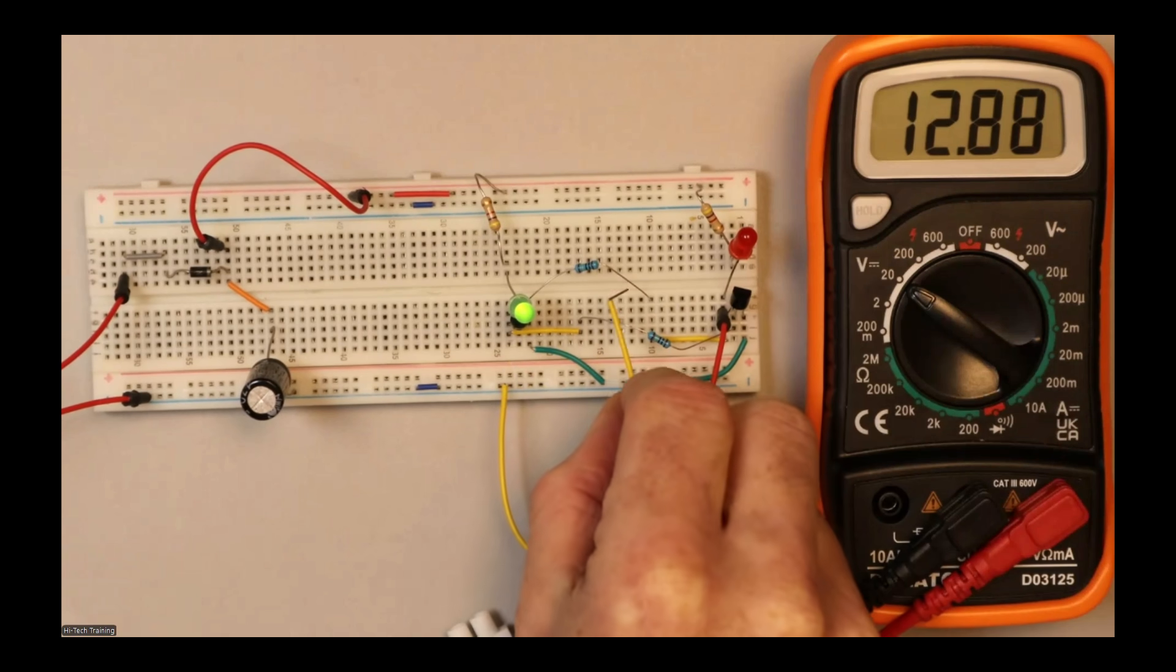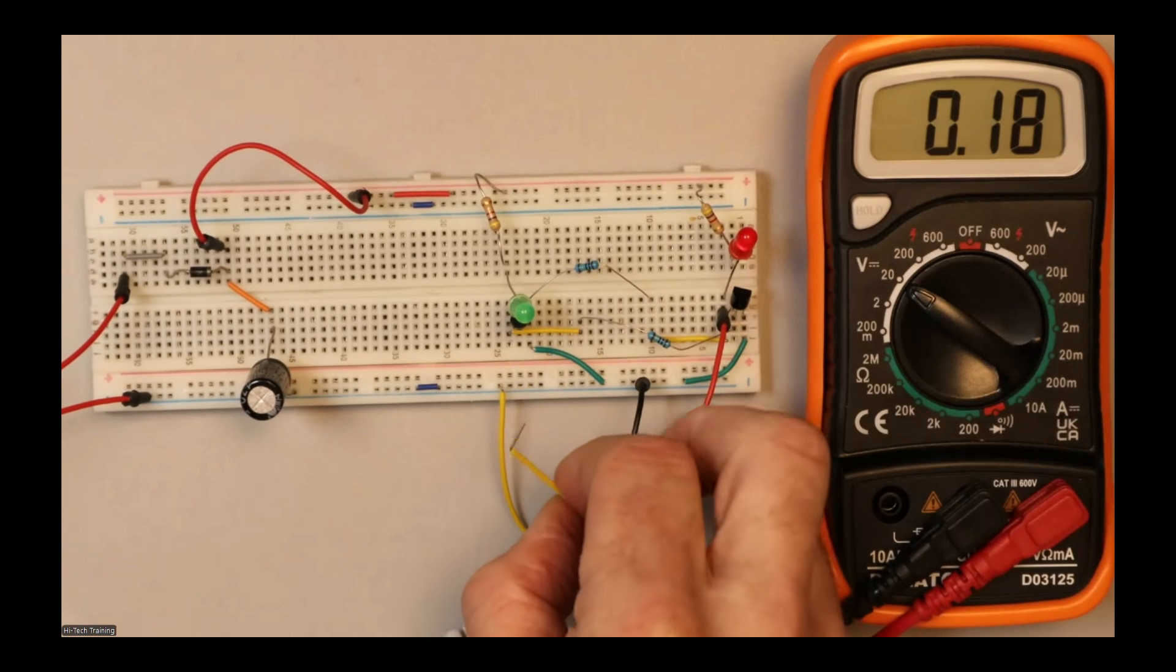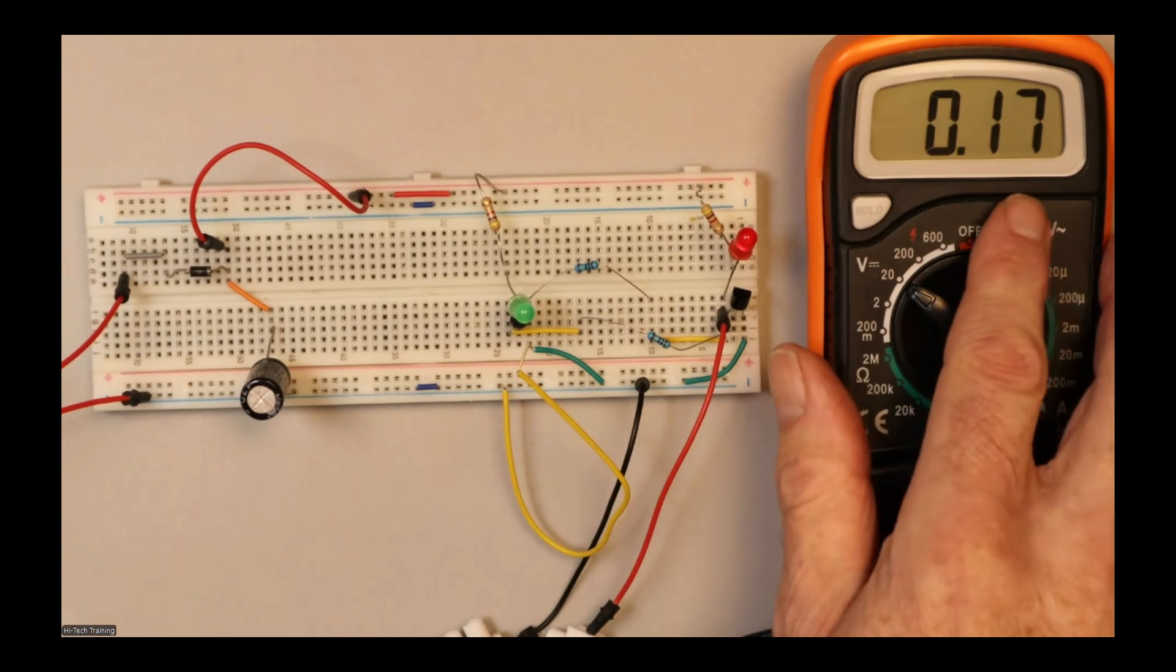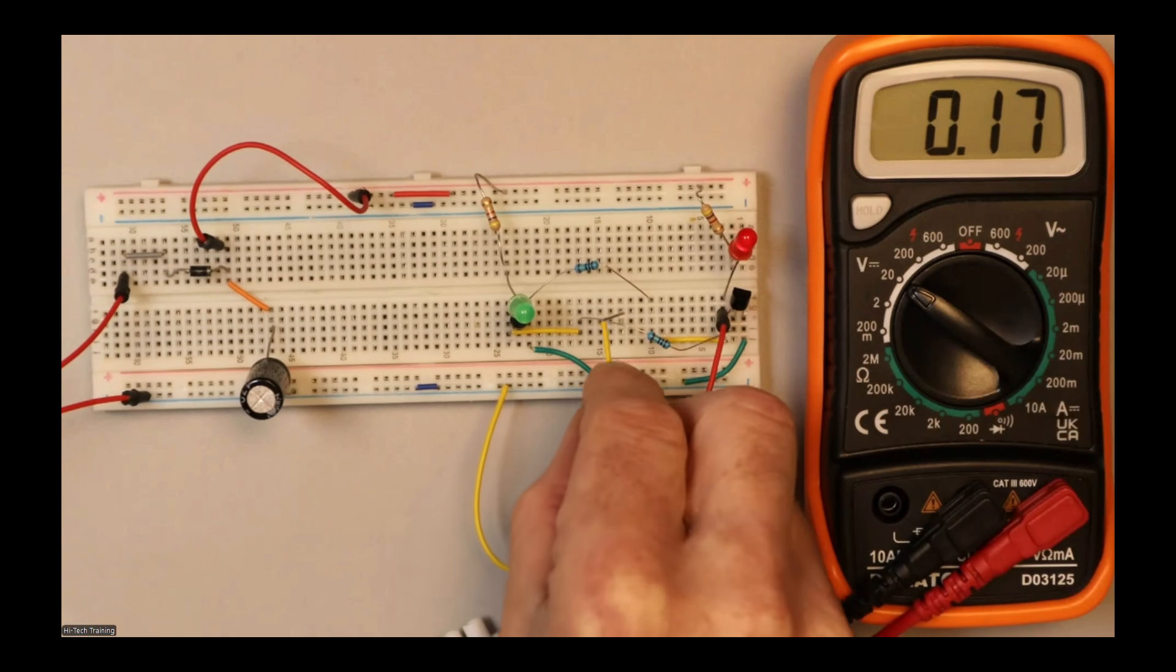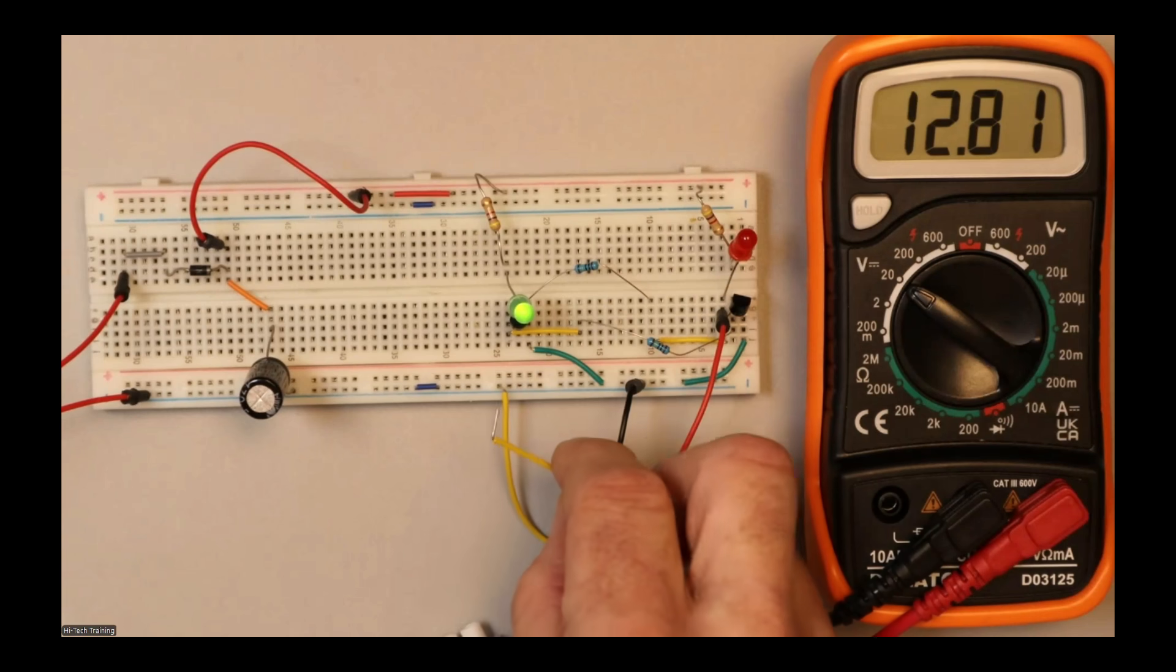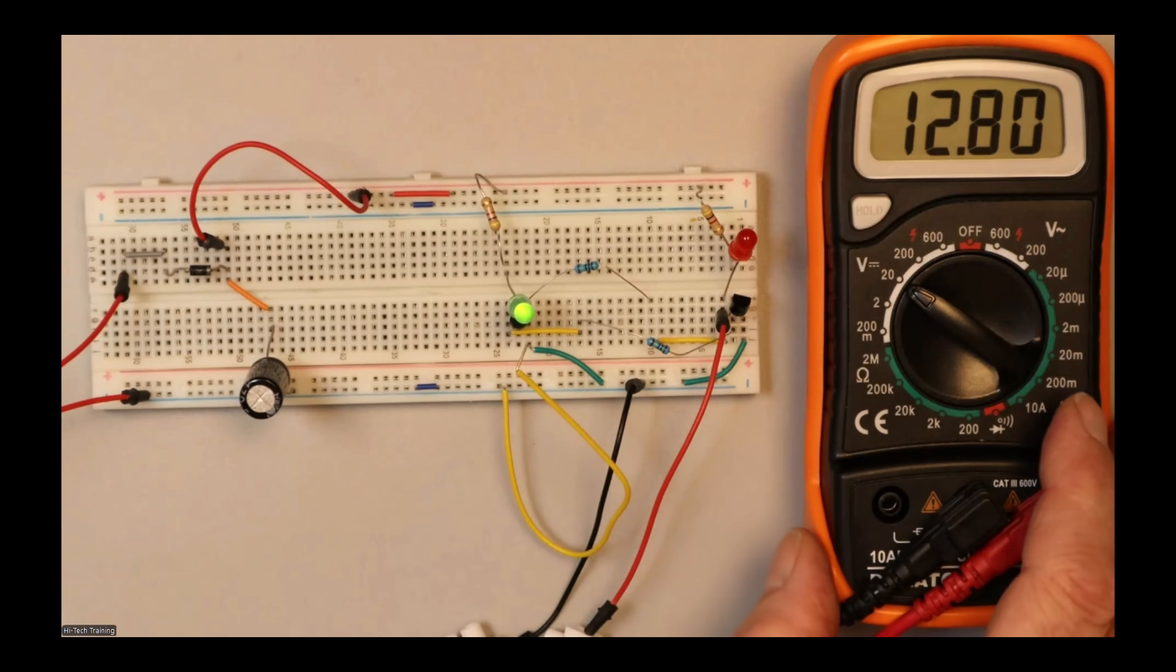If I switch this here, switch off the green one, the red one comes on and I get 0.17. So it's a bit strange. I get a low voltage when this is on and I get a high voltage when it's off, but that's what the course is for.